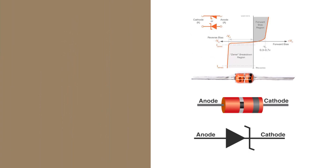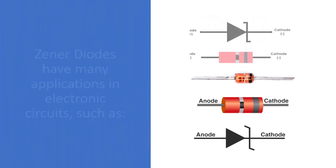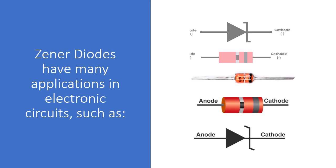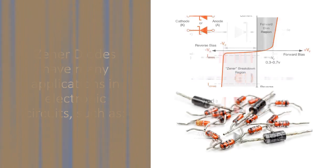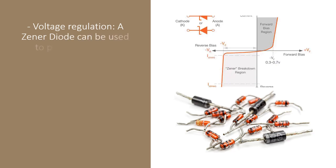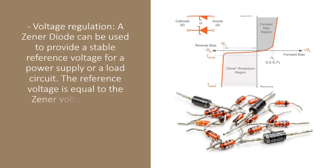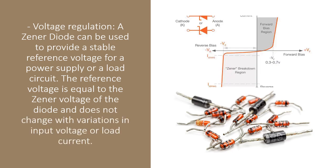Zener diodes have many applications in electronic circuits. Voltage regulation: A Zener diode can be used to provide a stable reference voltage for a power supply or a load circuit. The reference voltage is equal to the Zener voltage of the diode and does not change with variations in input voltage or load current.